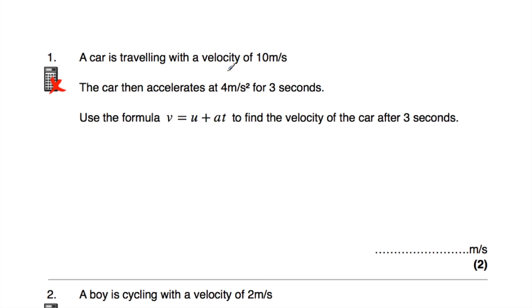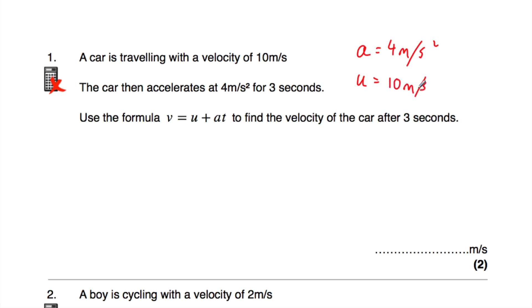In terms of this information, we know that a is equal to 4 metres per second squared. We know the initial velocity — remember initial velocity is u — so u is equal to 10 metres per second. So we've got a and we've got u. We've also got time; the time is 3 seconds, so t is equal to 3.